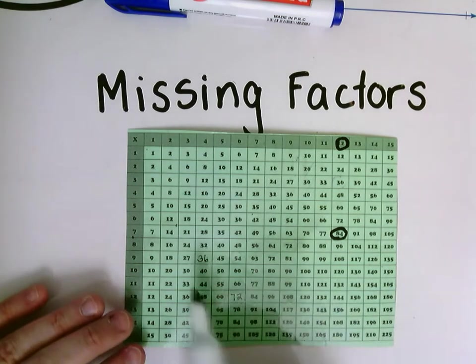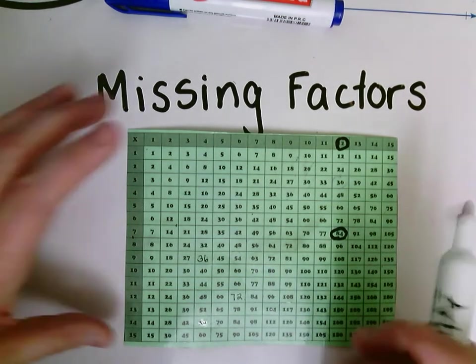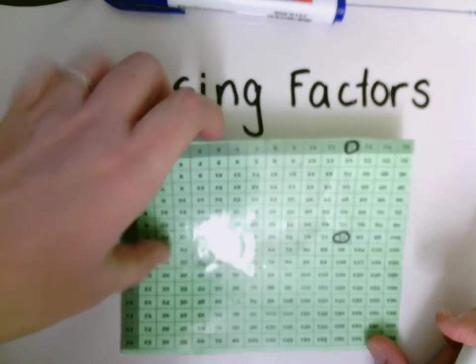So that is a way that we can find a missing factor on our multiplication chart.